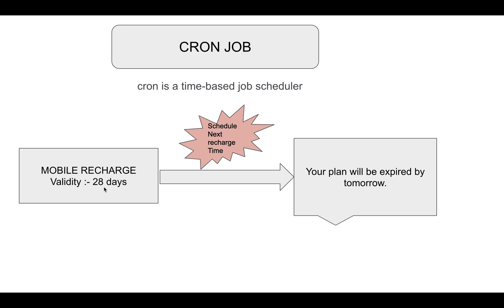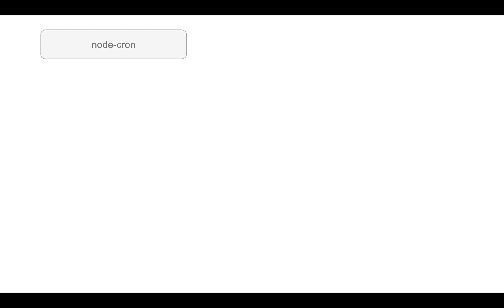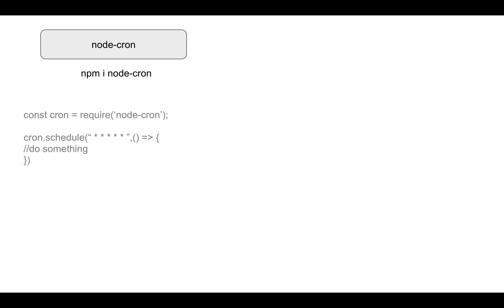So they will schedule the job — for example, if you are getting a validity of 28 days, on the 27th day you will get a notification related to this. In Node.js, we have a package we need to install called node-cron. You can simply write in your terminal: npm install node-cron.